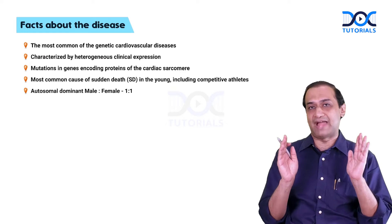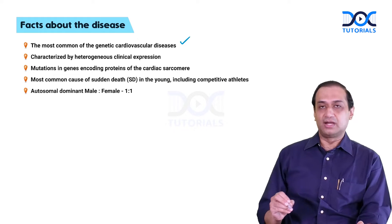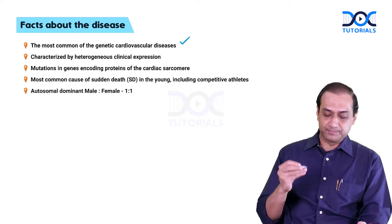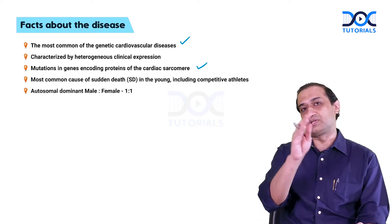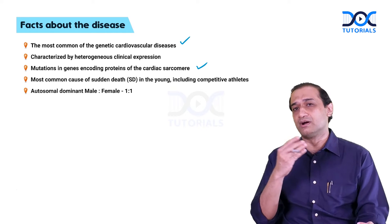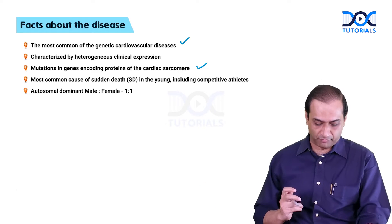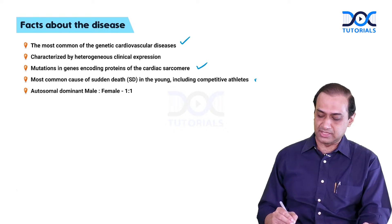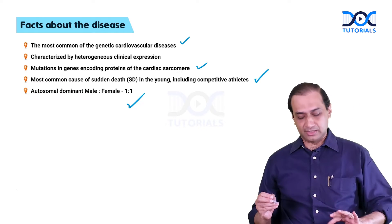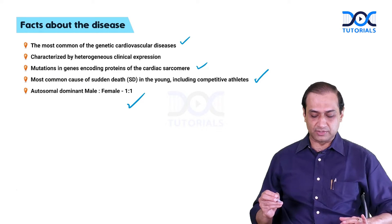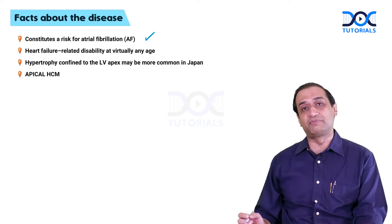It's the most common genetic disease in the cardiovascular continuum. It has heterogeneous expression, with mutations present in various proteins of the cardiac sarcomere — more than 13 genes with almost more than 20 mutations documented so far. The most common cause of sudden cardiac death in young athletes is ascribed to hypertrophic cardiomyopathy. It has one-to-one genetic inheritance and constitutes a risk for atrial fibrillation, which is an important cause to rule out in atrial fibrillation in the young.